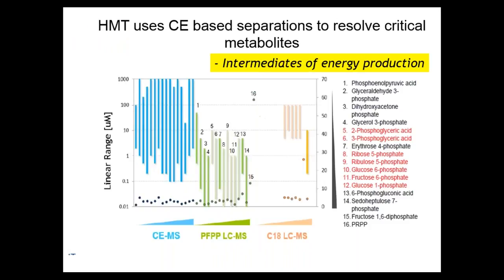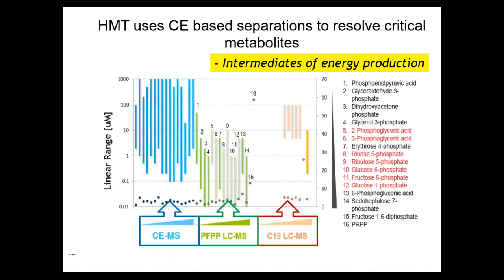There is no universal metabolite detection platform — each has its advantages. When it comes to polar hydrophilic metabolites, CE-MS is the superior method. The metabolites listed are highly charged phosphorylated central energy intermediates important in central energy metabolism, mitochondrial dysfunction, glycolysis, and gluconeogenesis. CE-MS is the only platform capable of resolving and measuring all of these in a single analysis. Most of these phosphorylated metabolites are not observed or resolved using C-18; while several are observed by PFPP, many are not resolved or non-linear. Only CE-MS can resolve, identify, and quantitate all these metabolites important in cancer and mitochondrial research.